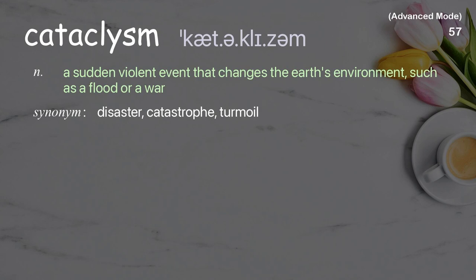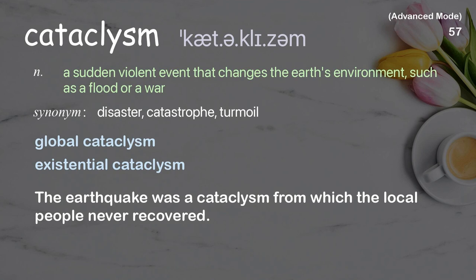Cataclysm: A sudden, violent event that changes the earth's environment, such as a flood or a war. Examples: Global cataclysm. Existential cataclysm. The earthquake was a cataclysm from which the local people never recovered.